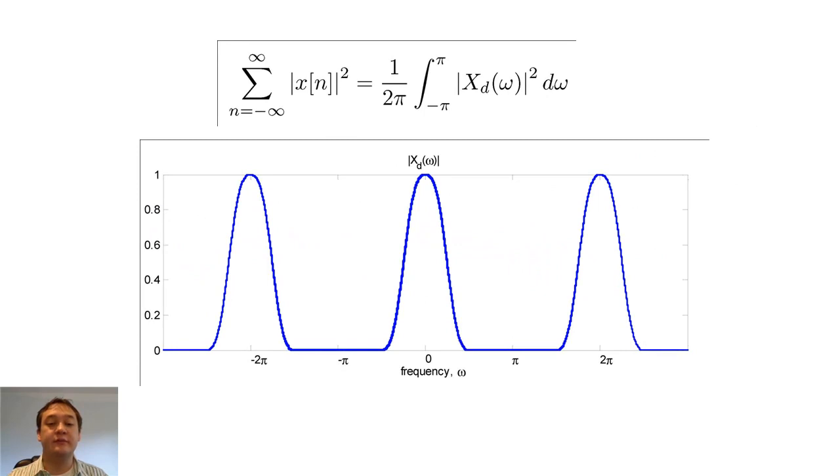Parseval's theorem tells us that we can calculate the energy in a signal by using either the discrete time signal or its DTFT. For both of these properties, you want to look at the DTFT and the discrete time signal and use whichever one will be easier for you to calculate.